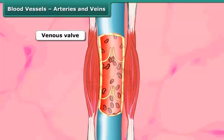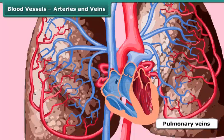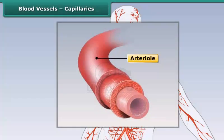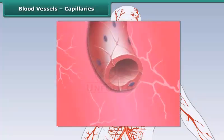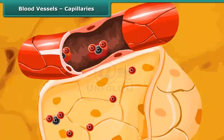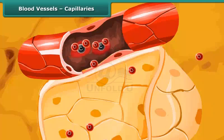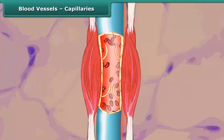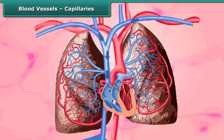Veins are of two types: systemic veins, which carry deoxygenated blood from different body parts to the heart, and pulmonary veins, which carry oxygenated blood from the lungs to the heart. Arteries branch into smaller vessels called arterioles, which further branch into capillaries — extremely thin blood vessels embedded in the tissues. They carry oxygenated blood from the arteries to the tissues. Oxygen from the RBCs and waste from the tissues are exchanged through the capillary walls. The capillaries then join to form venules, which join to form veins that carry deoxygenated blood back to the heart.